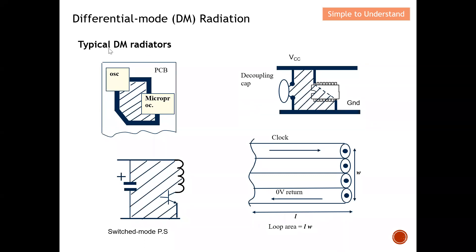These are all possible sources of differential mode radiation — they basically form a closed loop. Once you form a closed loop, it becomes a loop antenna and radiation occurs. For example, when using a bypass capacitor to power an IC, the current flows through the supply, through the decoupling capacitor, and returns to the source, forming a loop. Similarly, for a BJT switch that turns on and off, the current path forms a loop again, causing radiated emission.